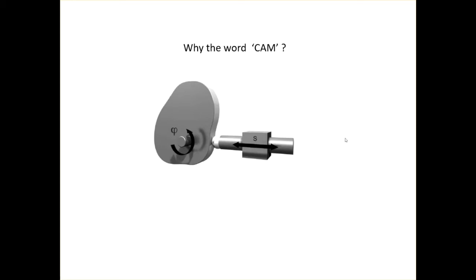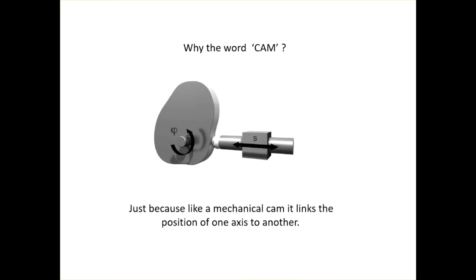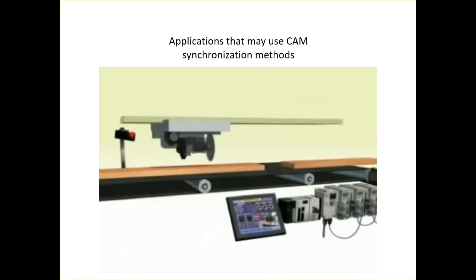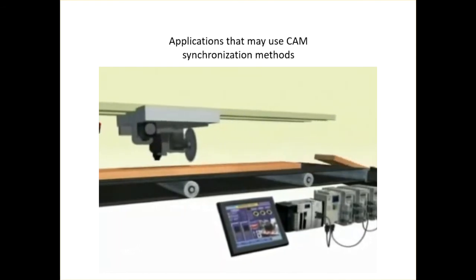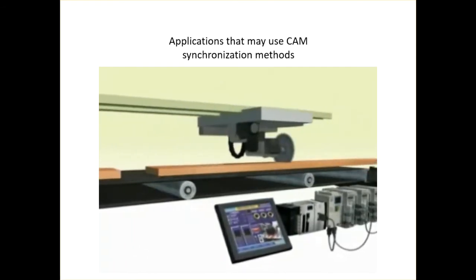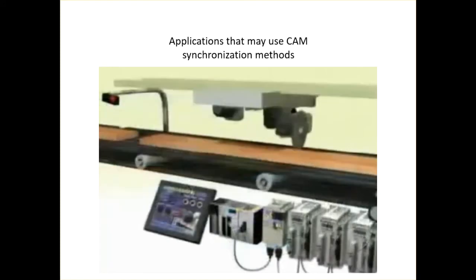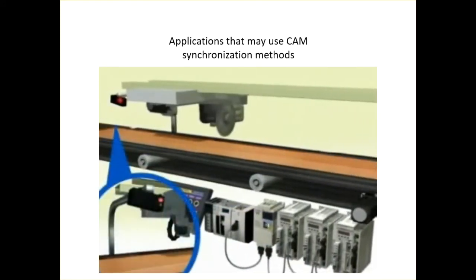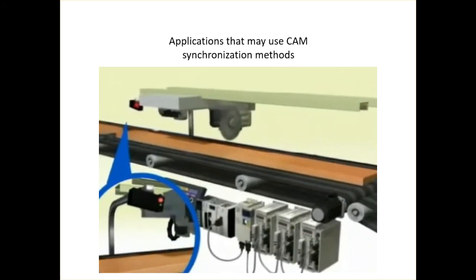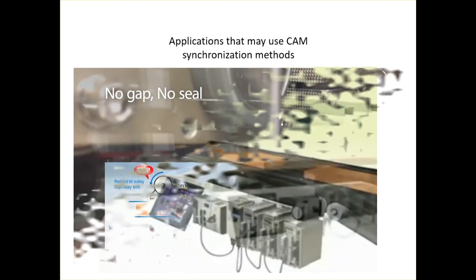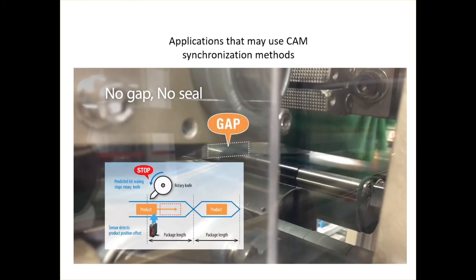So what do we mean by the word CAM? Well, like a mechanical CAM, a CAM inside the motion control refers to a relationship between one axis and another — a fixed positional relationship. In these videos you can see such a method being used inside motion controllers to produce CAM control motion: a flying shear, and next is a rotary knife operation using CAM synchronization.